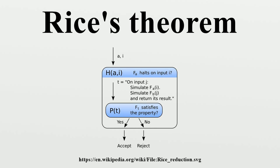A property of partial functions is called trivial if it holds for all partial computable functions or for none, and an effective decision method is called general if it decides correctly for every algorithm. The theorem is named after Henry Gordon Rice, and is also known as the Rice-Myhill-Shapiro theorem after Rice, John Myhill, and Norman Shapiro.